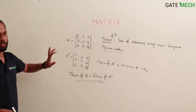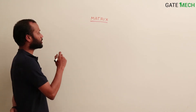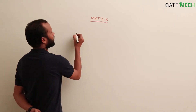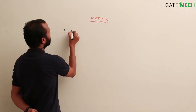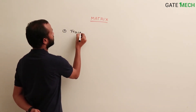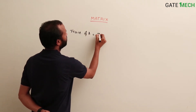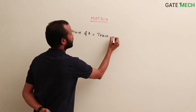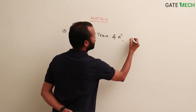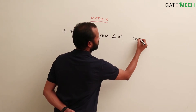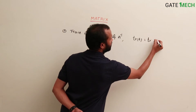Trace of A is always equal to trace of its transpose, because the diagonal remains the same when a matrix is transposed. So the first property: trace of A is equal to trace of A transpose.